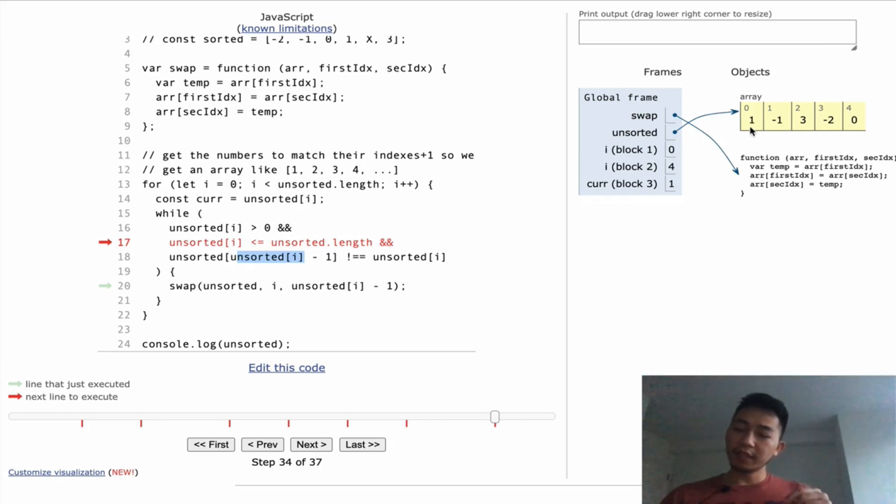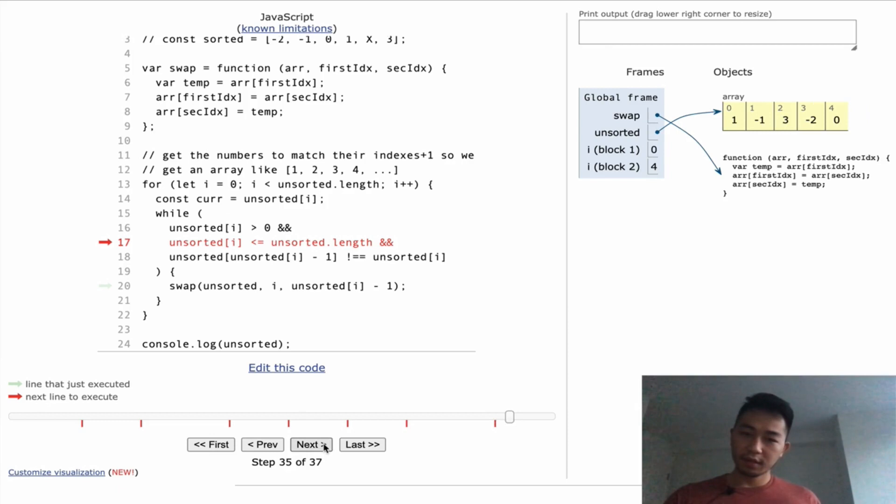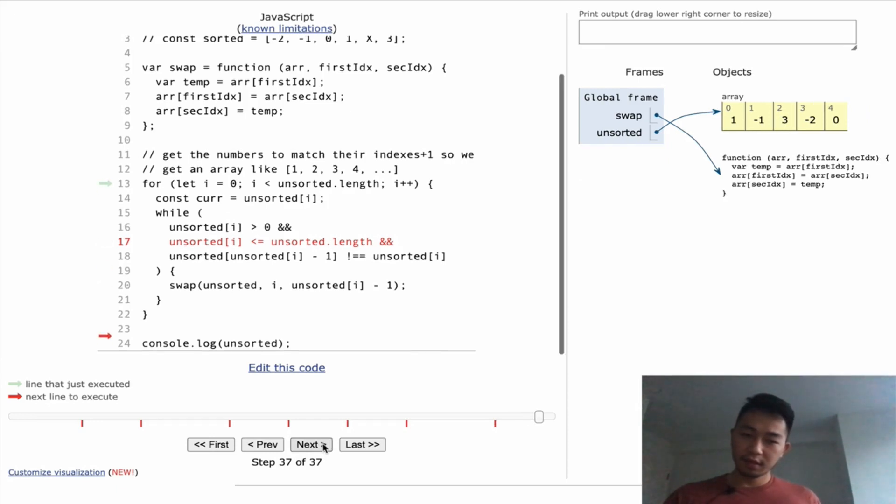So that might have all been confusing, but ultimately, look what's happened. We said we wanted the element at every zero plus one index, at least for the positive numbers. And that's what we have. We have one at zero, we have three at two. And these two positive numbers, which are the only positive numbers that we care about, they line up with the indices, because their value is just the index plus one.